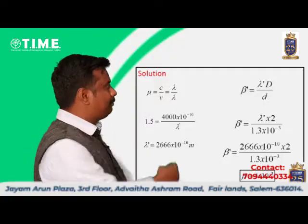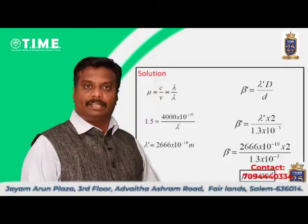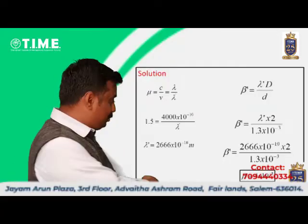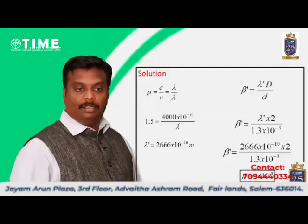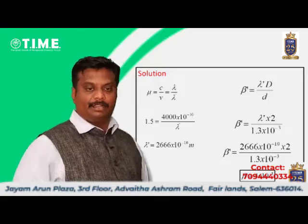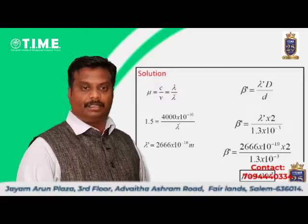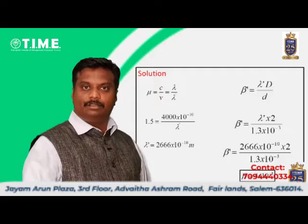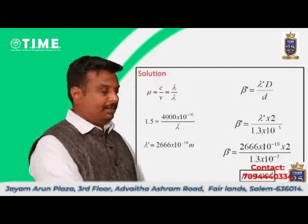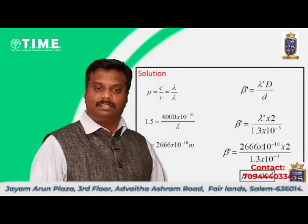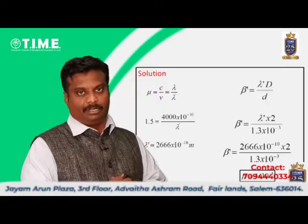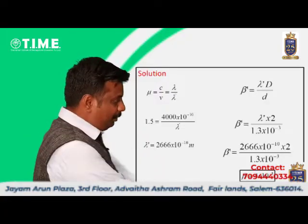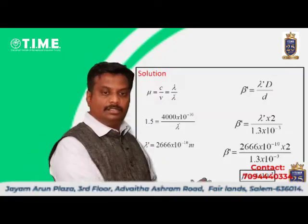Using the formula, beta dash equals lambda dash into capital D divided by small d. Substituting all the values: beta dash equals 2667 into 10 power minus 10, multiplied by 2, divided by 1.3 into 10 power minus 3. So the answer beta dash is 0.4 into 10 power minus 3, that is 0.4 millimeters.